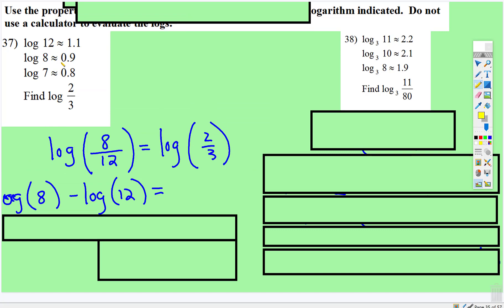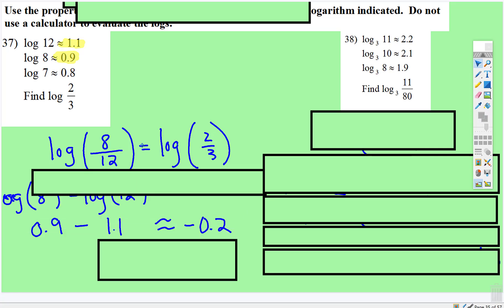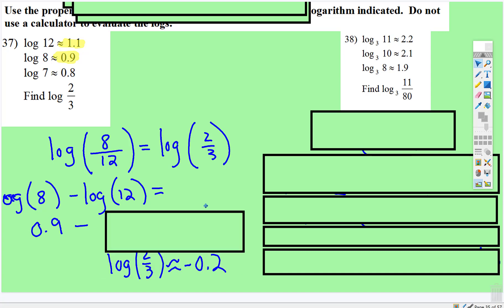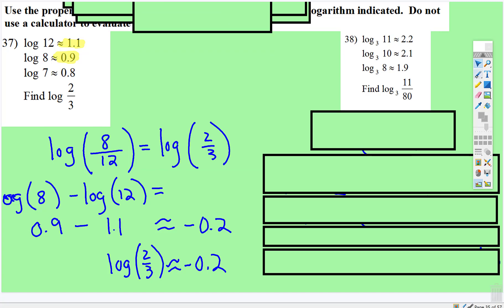So now we have log 8 subtract log 12. Well, we know what the approximation of log 8 is: 0.9. And we know the approximation of log 12 is 1.1. So 0.9 subtract 1.1 is about negative 0.2. Then you rewrite it into the original form. Log of 2/3 is about equal to negative 0.2.